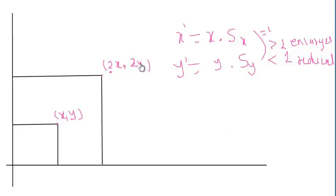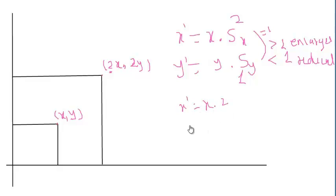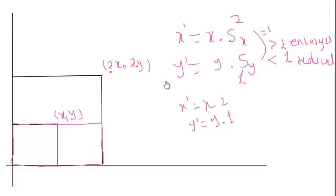We can take an example: if Sx is 2 and Sy is 1, that will make the new x' equal to x times 2 and y' equal to y times 1. So the new object will be double in the x direction while y stays the same, resulting in a rectangle. In this way we can achieve scaling. Thank you for watching this video, hope you liked it.